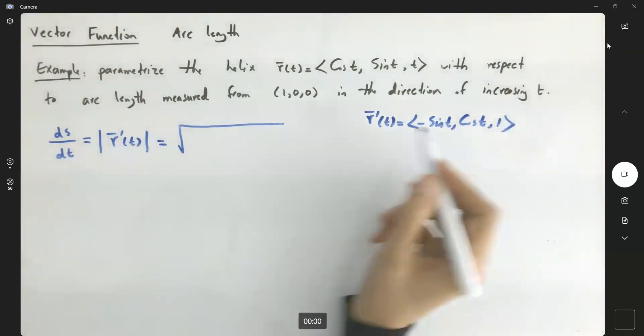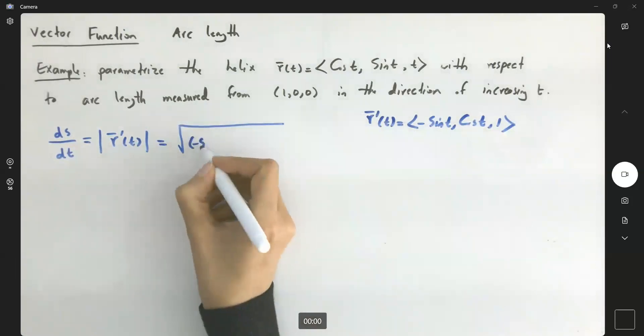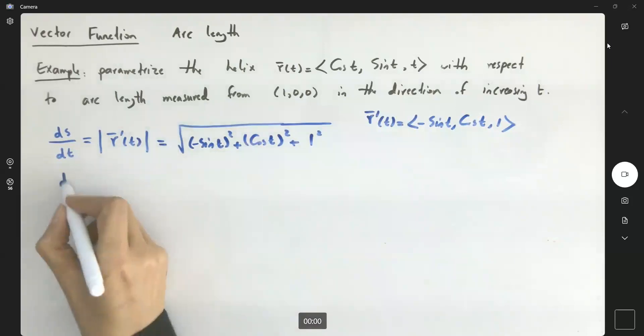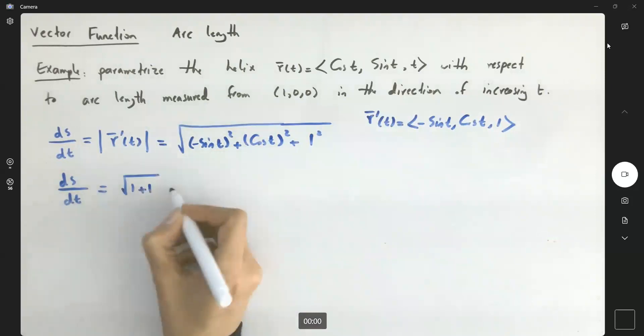This is going to be sine squared plus cosine squared plus 1 squared, and ds/dt is nothing but the square root of 1 plus 1, or square root of 2.